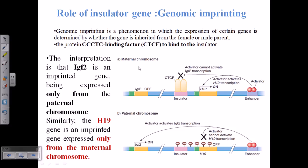There are some genes present in our body that can only be expressed from the paternal chromosome, and obviously there are some genes that can only be expressed from our maternal chromosome — they cannot be expressed from both chromosomes. These are some specific genes; for example, IGF2 is an imprinted gene. Genes which are under the control of genomic imprinting are called imprinted genes.